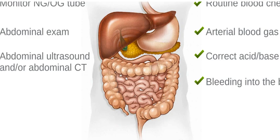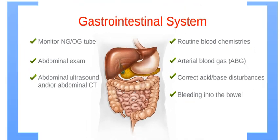Here are the proper steps for post-resuscitation care in the gastrointestinal system. Monitor NG or OG tube for patency and residuals, and perform a thorough abdominal exam. Consider an abdominal ultrasound and/or abdominal CT. Monitor routine blood chemistries, ABG, and acid-base disturbances, and check often for bleeding in the bowel.